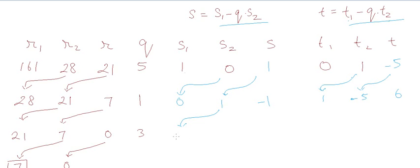We will make one more shift to go into the third iteration. S1 is now 1 and S2 is now minus 1. T1 is now minus 5 and T2 is now 6.